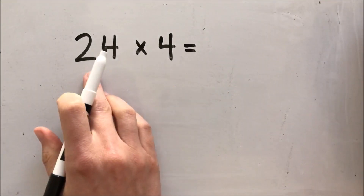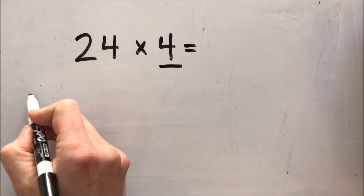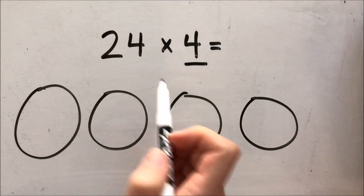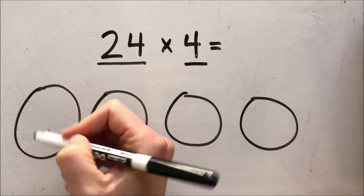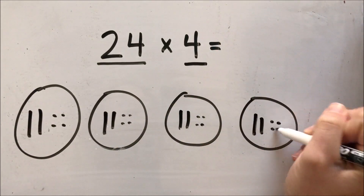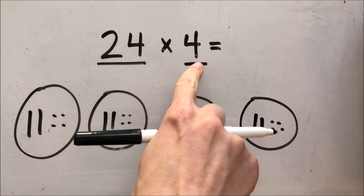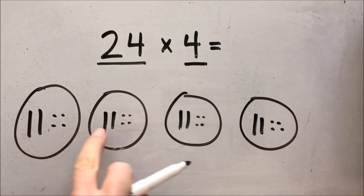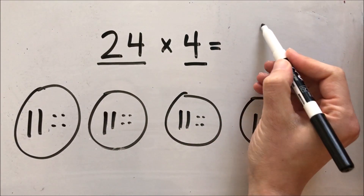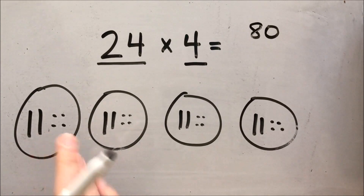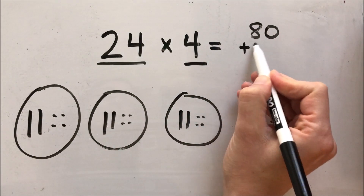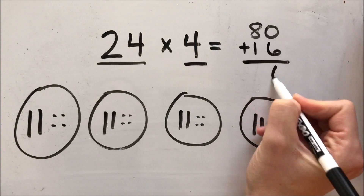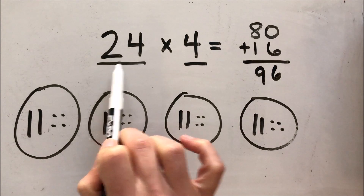I'm going to use the equal groups method first to see if I can get the correct product. In equal groups, I look at my two factors, find my smallest one — which is 4 — and draw four groups. Next I'm going to put 24 in each group using tens blocks and ones blocks, not 24 individual tallies. Now that I have 24 in each of my four groups, I'll count my tens first: 10, 20, 30, 40, 50, 60, 70, 80 — and jot that down. Then I count my ones by twos: 2, 4, 6, 8, 10, 12, 14, 16. When I add up my ones and tens, my product of 24 times 4 is 96.